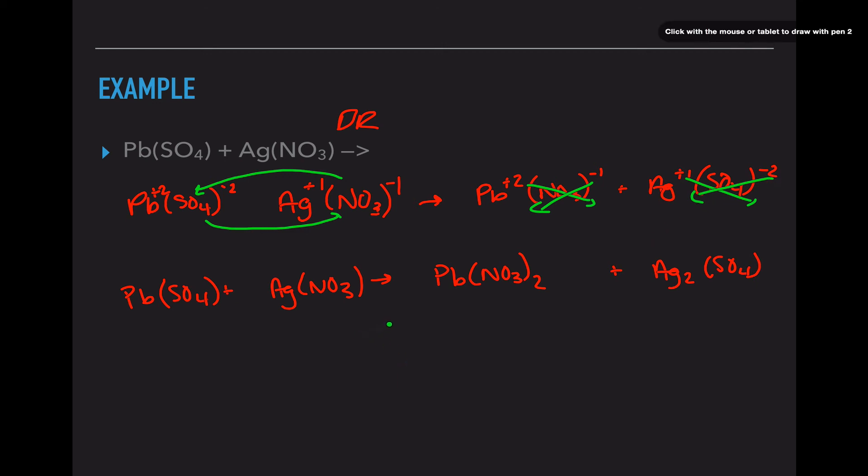Now, just balance. In order to balance, I want Pb, SO4 because it stays together, Ag, and NO3 because it stays together. And I have 1, 1, 1, and 1, 1, 2, 2, 1. So Ag(NO3) needs another molecule on this side, so I'm going to put a 2 out front in order to balance these two. So that's our final reaction.